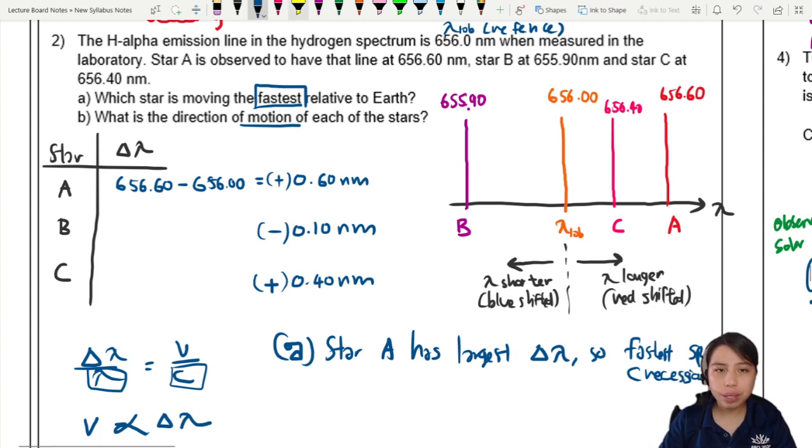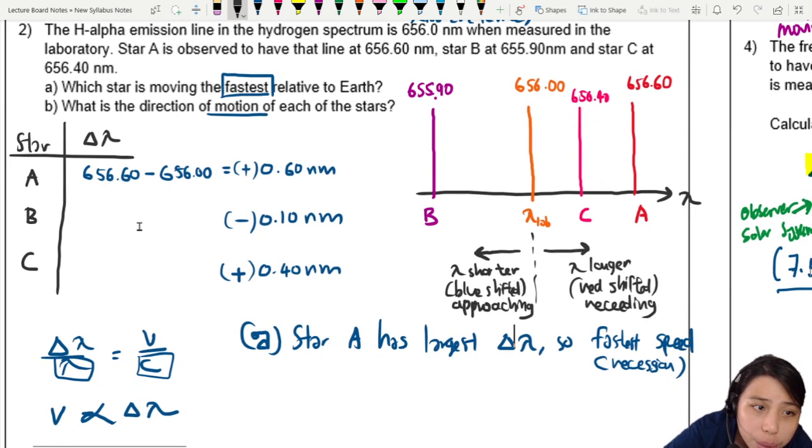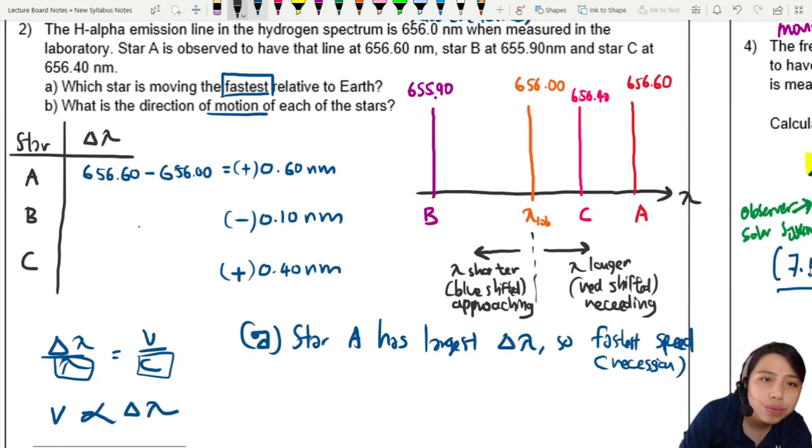Recession speed, because redshift means receding. Blueshift means approaching, coming towards you. So B is: what is the direction of motion for each of the stars? I think let's just expand this table a little bit.